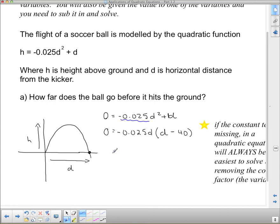Now, I'm not done. I have to solve. So d equals, well, either this first factor is 0 or this bracketed factor is 0. If the first factor is 0, that means d is 0. If the second bracketed factor is 0, that means d has to be 40.